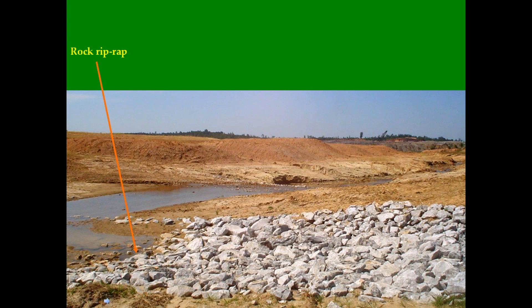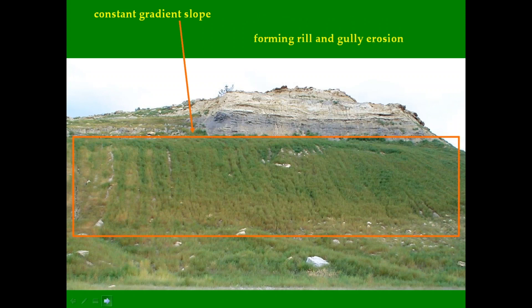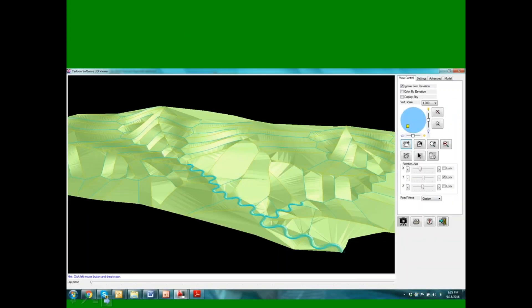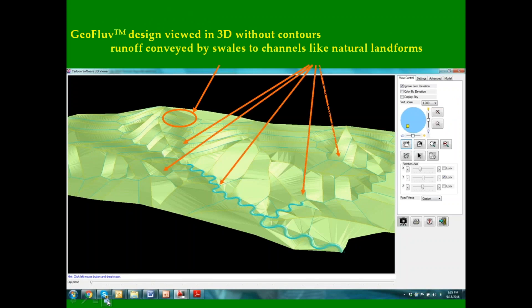Because all the reclamation design channel longitudinal profiles were not graded to the local base level, all the reclamation is incising and eroding downward to get on a natural longitudinal profile to the local base level. In this example, spoil was placed against the high wall but at a constant gradient slope without any channels to collect and convey the runoff waters, resulting in rill and gully erosion across the slope face. Note that in this Geofluv design, runoff waters no longer flow erosively for long distances over constant gradient slopes, but instead are conveyed by swales on complex slopes to channels sized for their flow at every point, just like a stable natural landform.